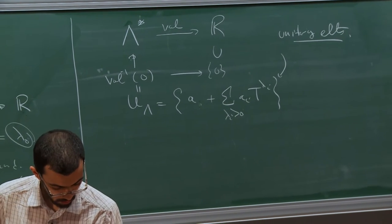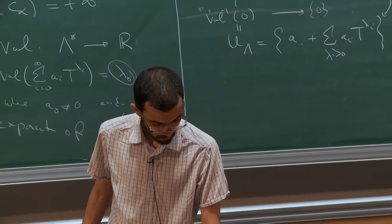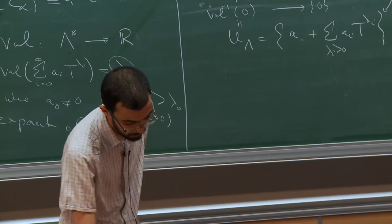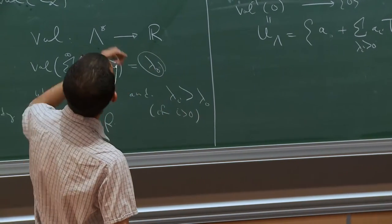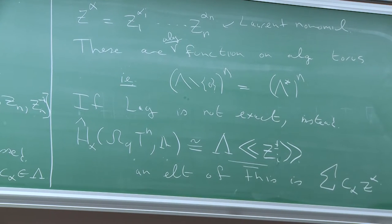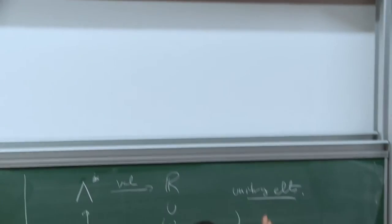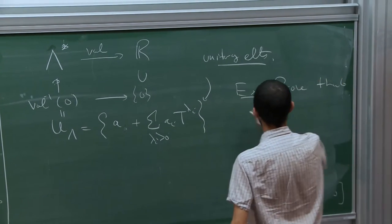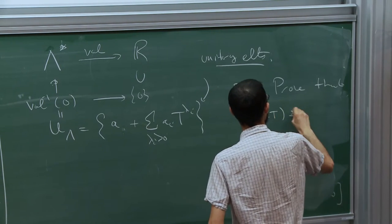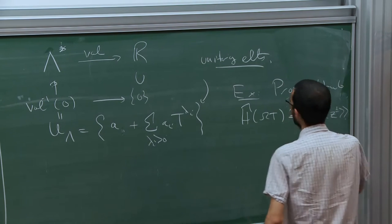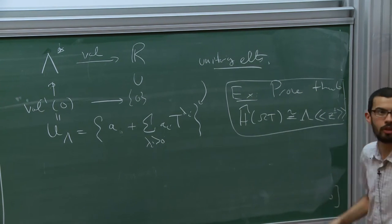Every element of this completion of the homology of the base loop space has this form — you can take that as an exercise: prove that H-hat of the base loop space of the torus is isomorphic to these. The proof is basically just rearranging things.